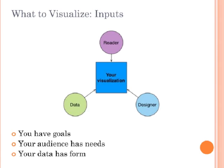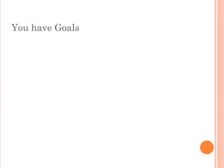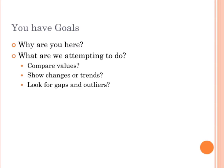Let's talk about your goals. These are just the basic questions you want to ask yourself: Why are you here? What are we attempting to do? Are we trying to compare values? Are we going to show changes or trends? Is there a timeline aspect? Are there gaps or outliers we're looking for? What are we trying to represent in the data? What data relationships matter? We want to know if there's a correspondence between two different dimensions of our data, if there are seasonal changes in sales, if different parts of the country are using our service at different rates relative to the population. Understanding what relationships you're looking for is a really good place to start.